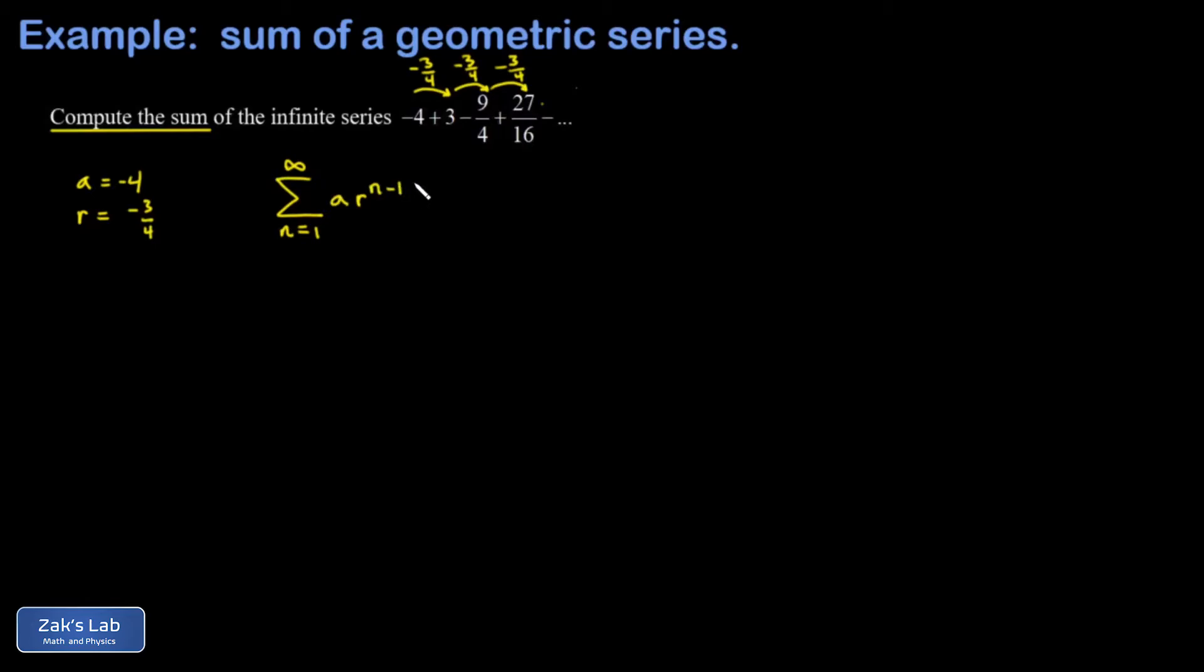And this is the generic formula for a geometric series. I have a starting point A. When I sub in n equals 1, I get r to the 0, so this thing definitely starts at a. And then every time n increases by 1, I'm tacking on an additional factor of r.